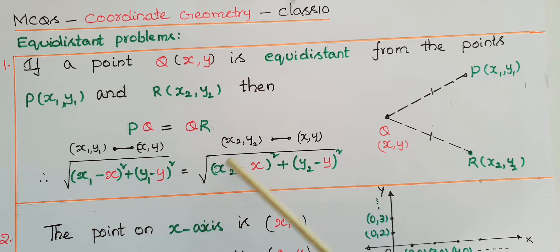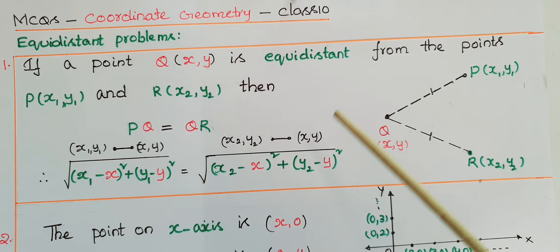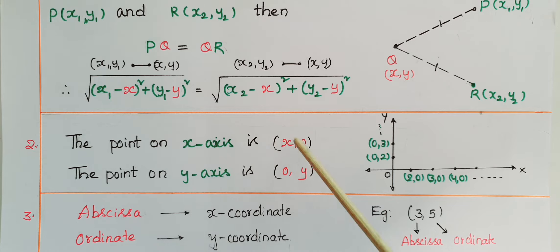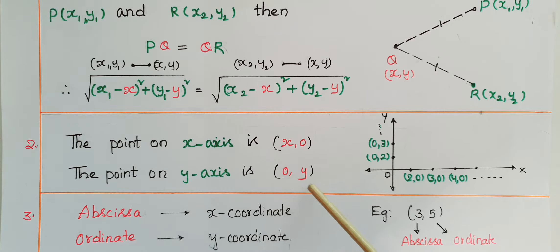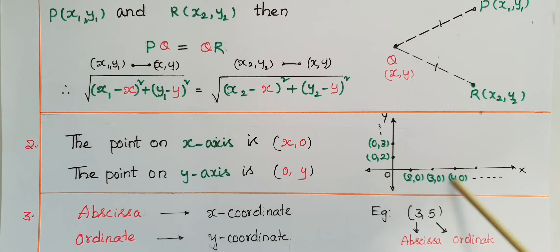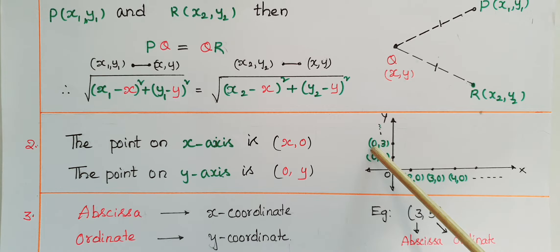That is equal to square root of (x2 minus x) whole square plus (y2 minus y) whole square. The second point is: the point on the x-axis is always in the form of (x, 0), and the point on the y-axis is in the form of (0, y). On the x-axis all the points are in the form (2,0), (3,0), (4,0), etc., because the y-coordinate is 0 on the x-axis. On the y-axis the x-coordinate is 0, so this is in the form of (0, y).